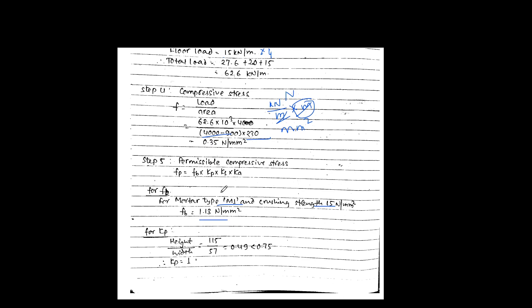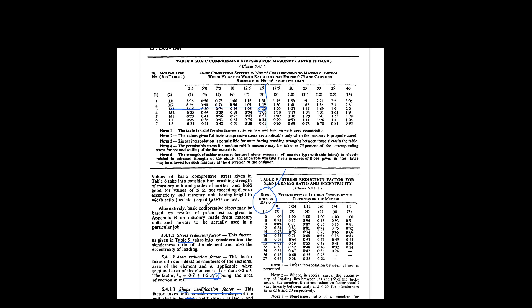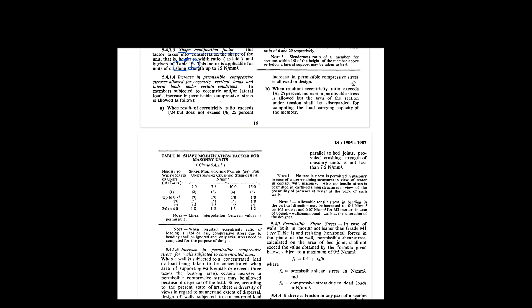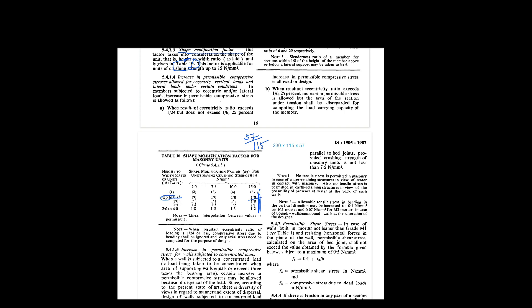Now we find kp, the shape modification factor, using Table 10. For the masonry brick unit, we need the height-to-width ratio. Assuming standard brick size of 230 × 115 × 57 mm, the width is 115 mm and height is 57 mm. So height-to-width = 57 ÷ 115 = 0.49. Since 0.49 is within the range up to 0.75, kp = 1.